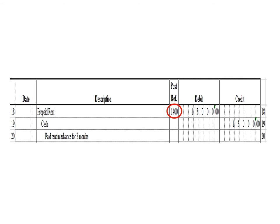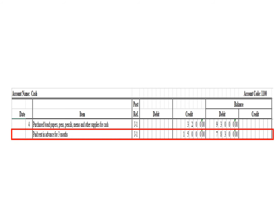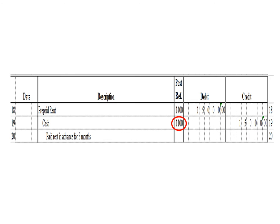Let us post the credit entry — a credit to cash for $15,000. To post the credit entry in the cash ledger, we write the description: paid rent in advance for three months. We don't have to write the date because this posting also occurred on March 4, which we already wrote. Posting reference J1. Under the credit column, we write $15,000. The balance is $78,300 — previous balance $93,000 debit minus $15,000 credit. After posting, we write posting reference 1100.